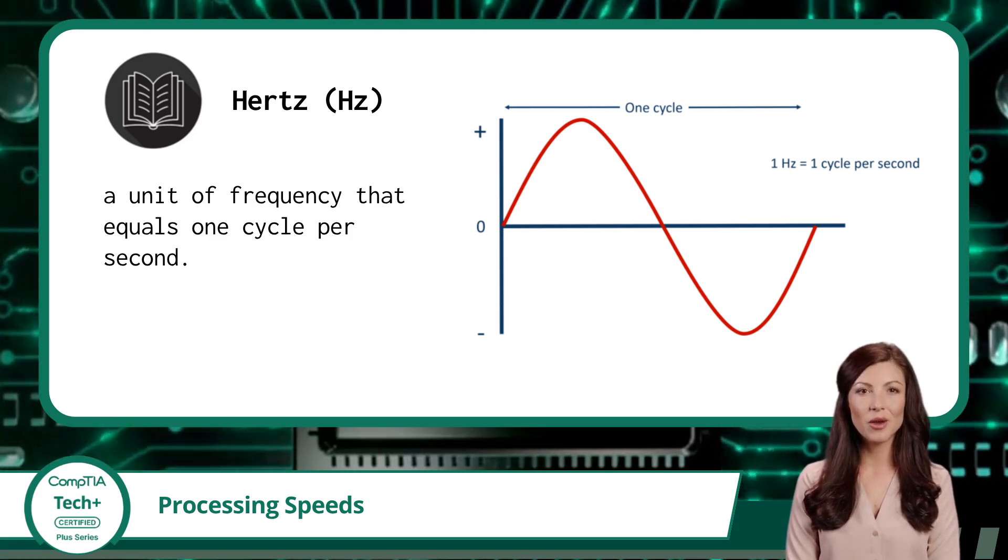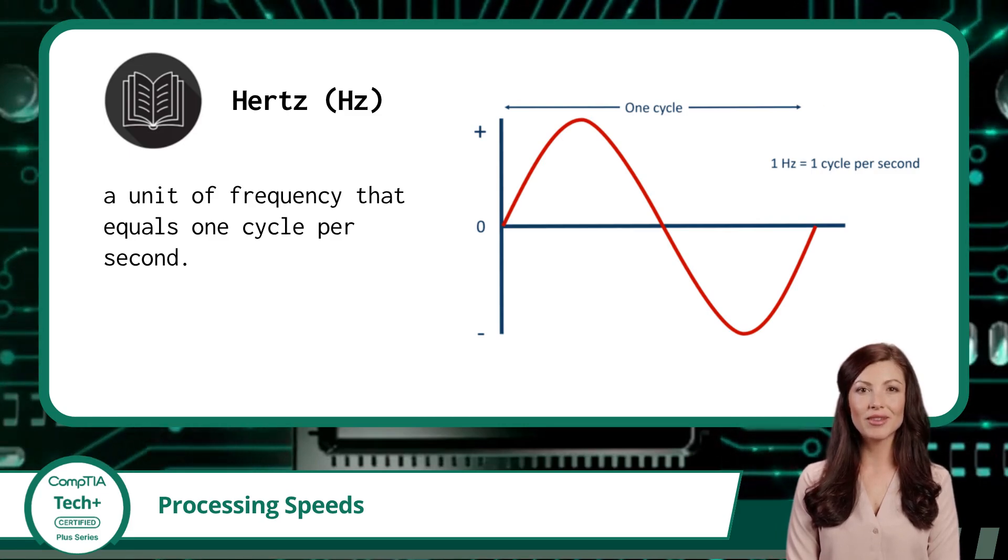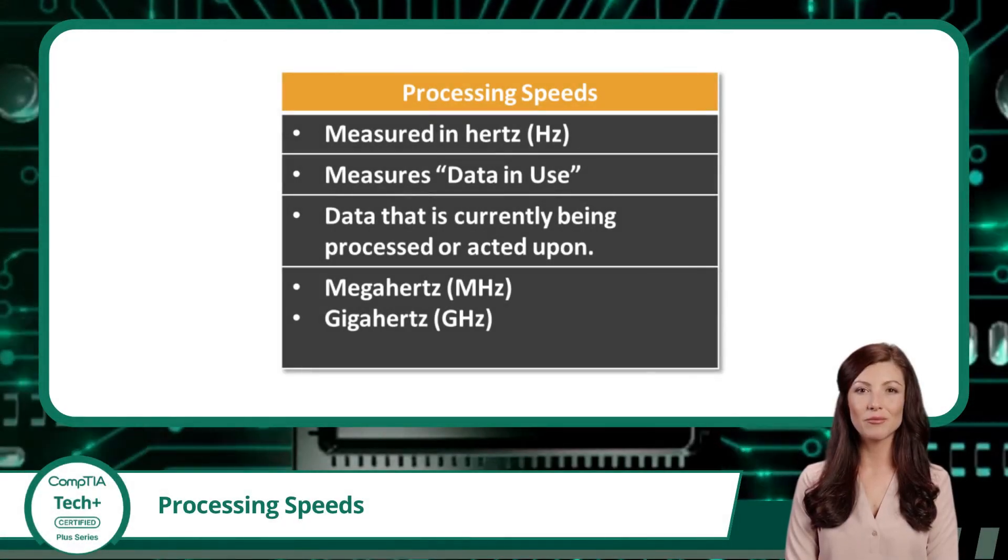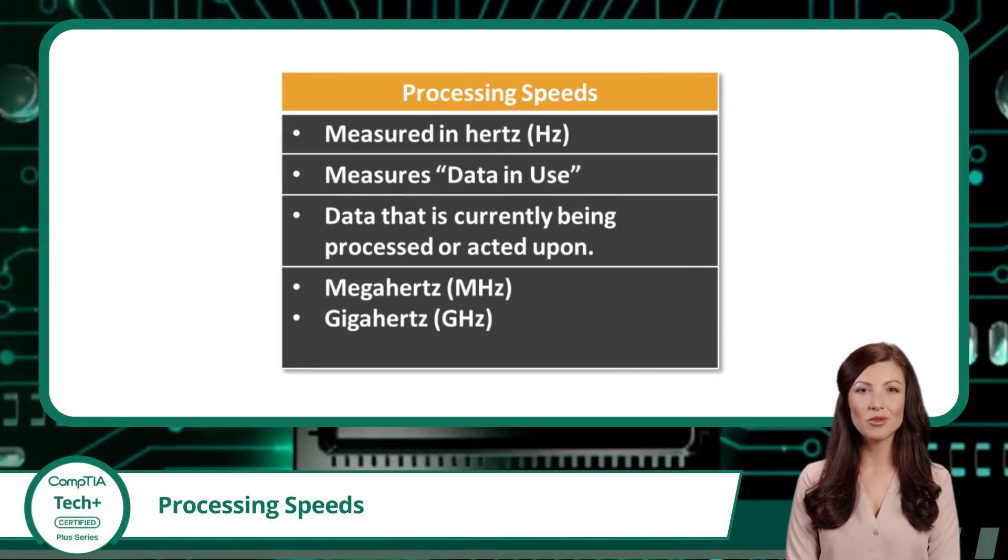These prefixes help us talk about much larger quantities without writing out endless zeros. For example, mega means million, so megahertz is millions of cycles per second. Giga means billion, so gigahertz is billions of cycles per second.